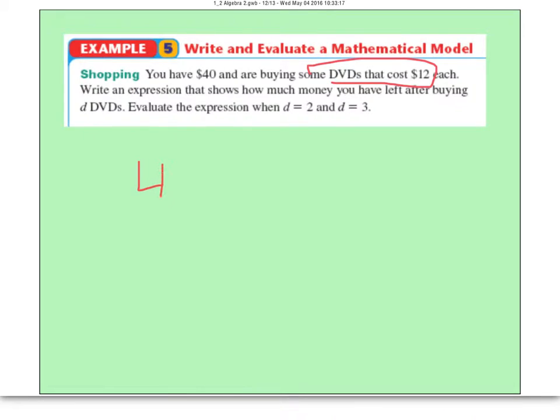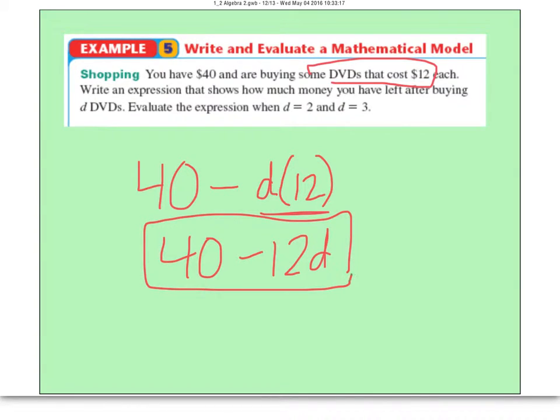Well, if we have $40 in our pocket, we're going to subtract from it however many DVDs we buy, but each DVD is $12. Now typically when we write a term, this is one term, we put the number before the variable. So really the better way to write this is 40 minus 12D. So that's the expression.